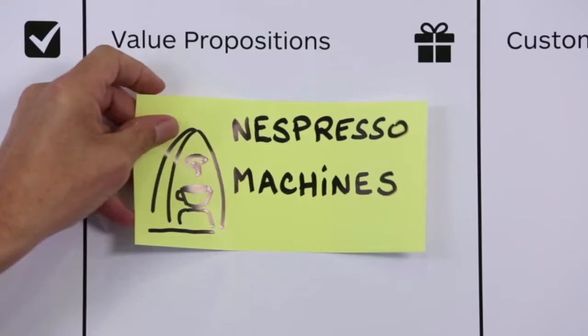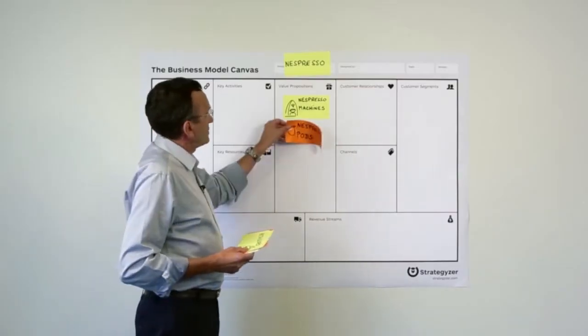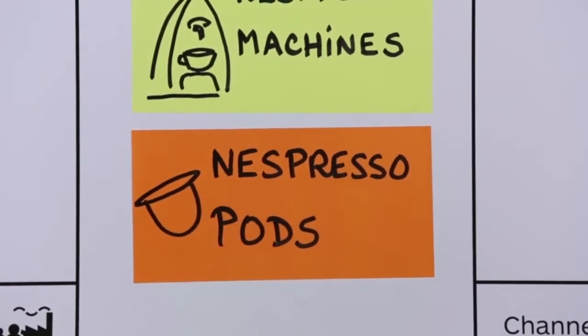And this value proposition consists mainly of two different products. The first one is the Nespresso machine, the other one are the capsules.